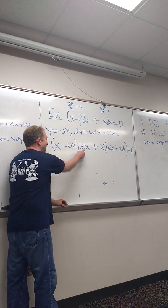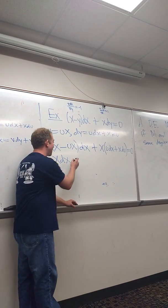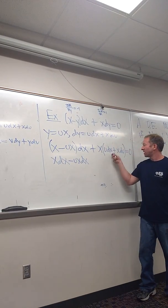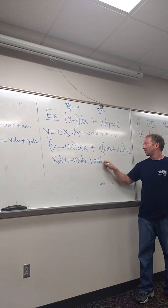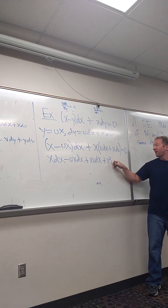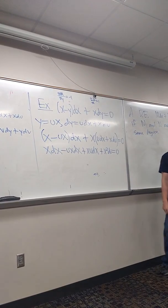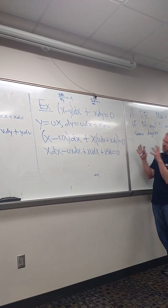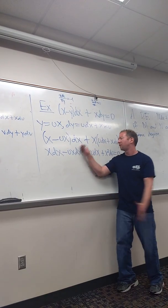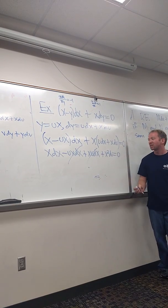So we have to distribute. We get x dx, then minus ux dx, and then x u dx, and x squared du. And usually stuff cancels or simplifies — things work out nicely on these. Just look at it. Does anything go away? The middle terms cancel, so usually stuff cleans up really nicely on these.